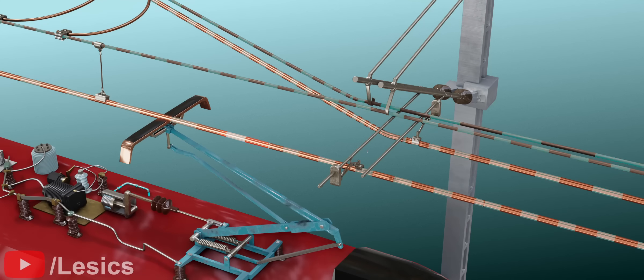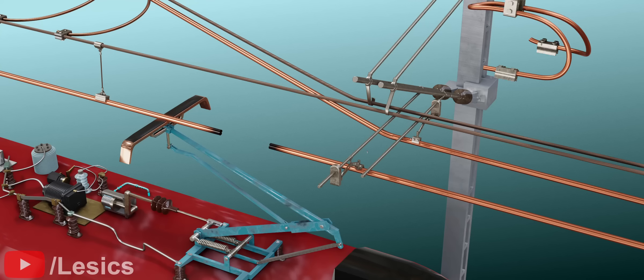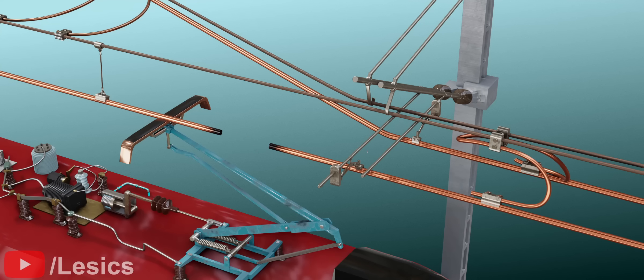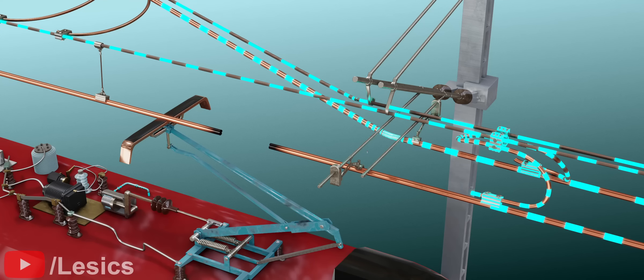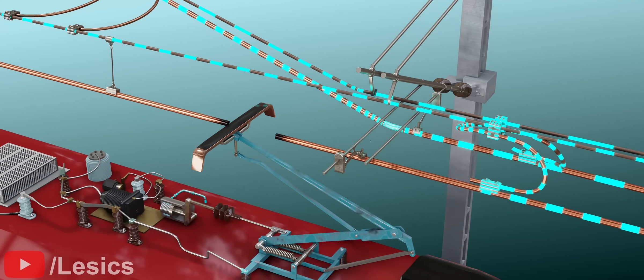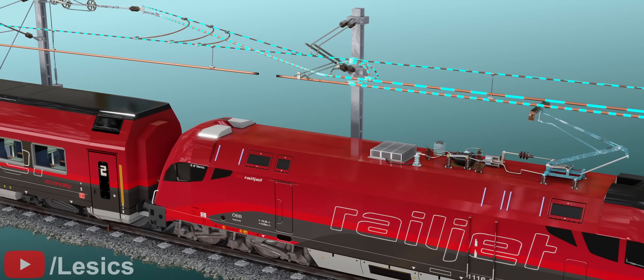Additionally, if there is any damage in the contact wire, the system will not fail. Please have a look at this jumper design. The jumper is passing through the catenary wire. This means the power will be supplied by the catenary wire through jumpers. Thank you for watching the video. See you next time.